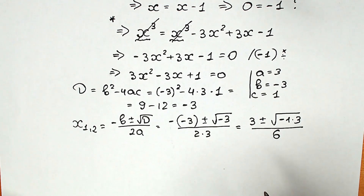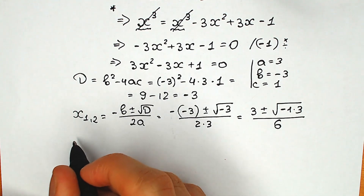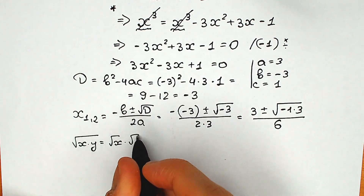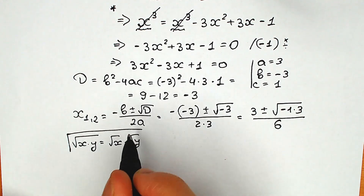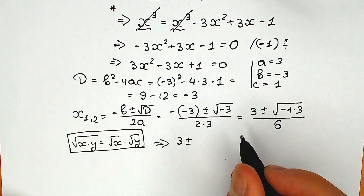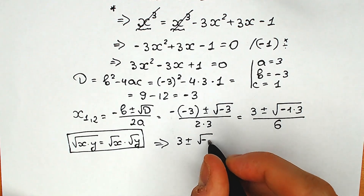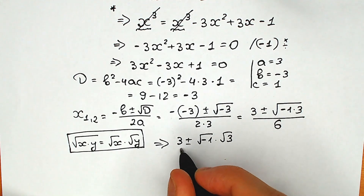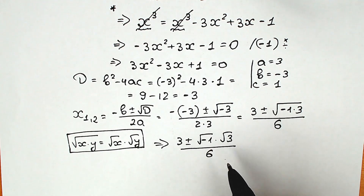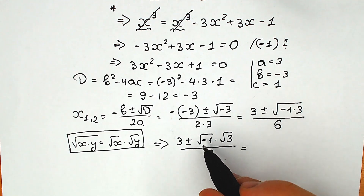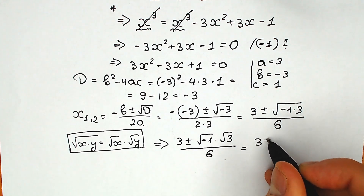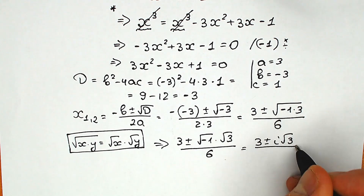Let's remember a really great rule: when we have square root of x times y, we can write it as square root of x times square root of y. Applying this rule, we have 3 plus or minus square root of minus 1 times square root of 3, all over 6. Instead of square root of minus 1, we write the imaginary unit i, because in terms of real numbers there's no way square root of minus 1 equals some real value. So we have 3 plus or minus i times square root of 3, all over 6.